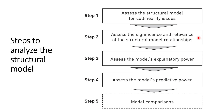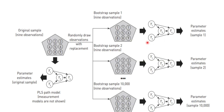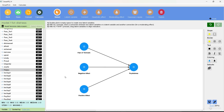Step 2 is to assess the significance and relevance of structural model relationships. In PLS SEM this is done using the bootstrapping method. Bootstrapping generates p-values and confidence intervals for non-parametric statistics — data where normality is not a requirement. It randomly draws with replacement as many samples as the number of bootstraps selected. For example, 10,000 bootstraps draws 10,000 samples from the original sample, calculates PLS path coefficients, then generates standard errors for p-values.